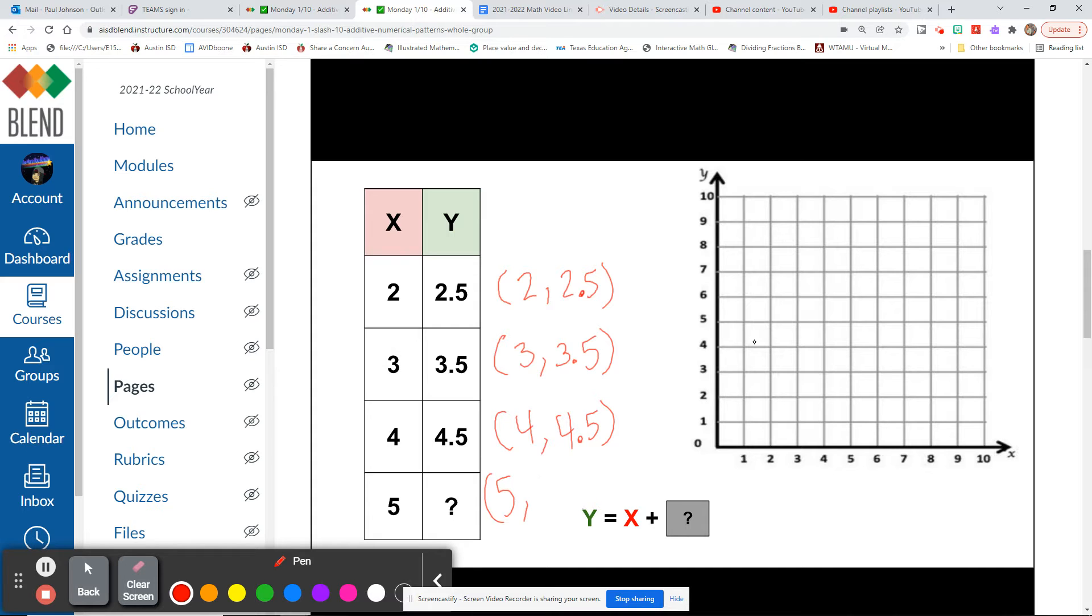If our pattern is y equals x plus blank, what does it look like? We are adding 2x each time to get our y. Let's use this to figure out our last piece of information here. So y is equal to 5 plus blank. On all the rest of these, it looks like 2 plus blank equaled 2 and 5 tenths, or 3 plus blank equals 3 and 5 tenths.